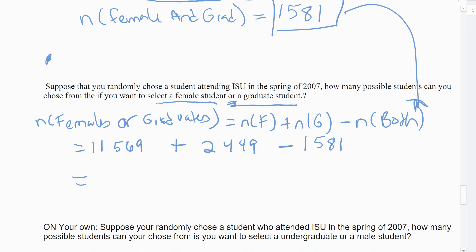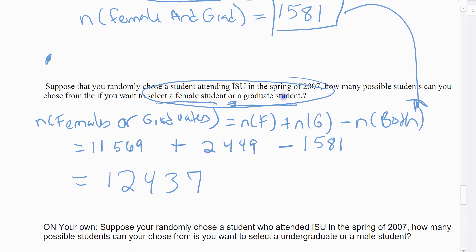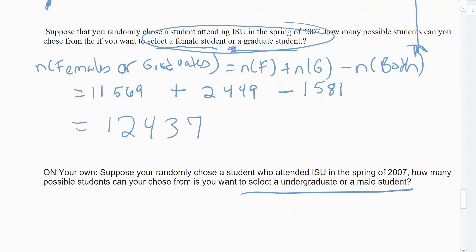Be careful with these large numbers when you add and subtract — it should come out to 12,437 students out of my total that are either female or graduate students, with some being both. On your own, practice the OR problem: undergraduate or male students. Make sure you're careful not to count male students who are undergraduates twice.